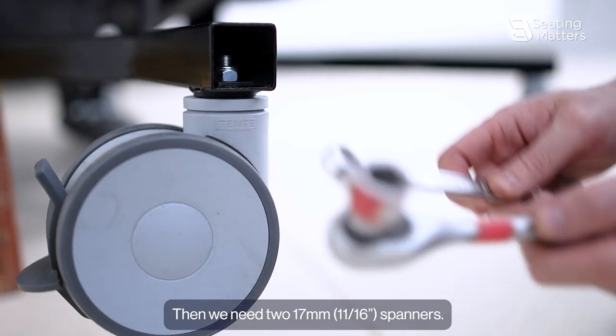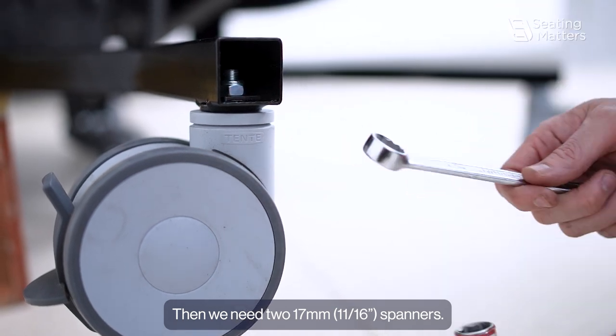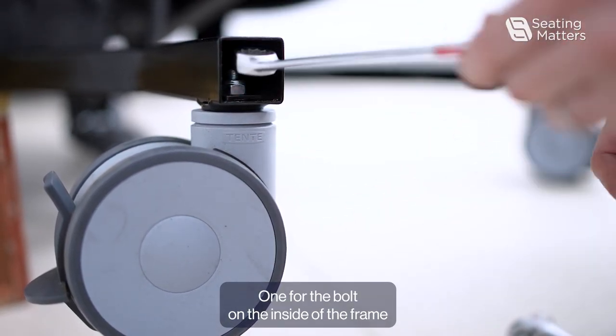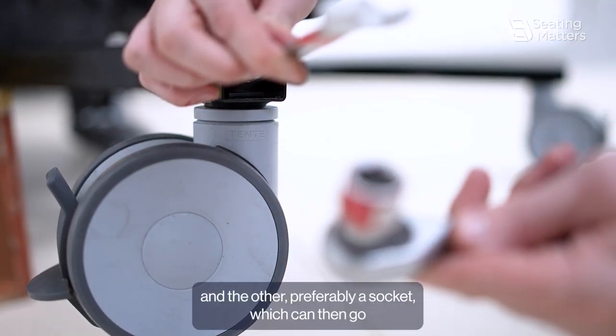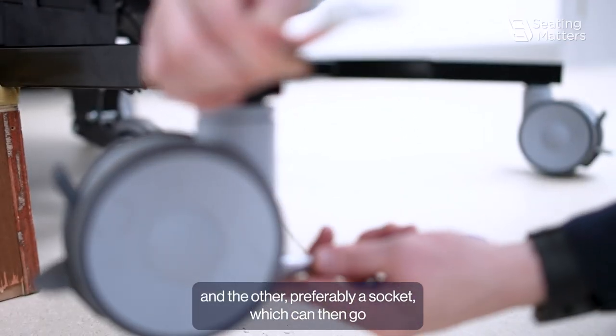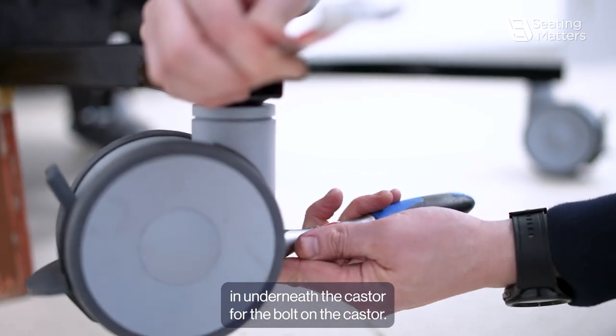Then we need two 17mm spanners, one for the bolt on the inside of the frame and the other, preferably a socket which can then go in underneath the caster for the bolt on the caster.